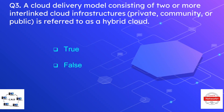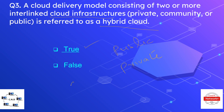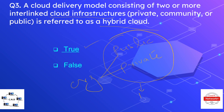Question number three: a cloud delivery model consisting of two or more interlinked cloud infrastructures such as private, community, or public is referred to as a hybrid cloud. We have two options — whether the statement is true or false — and the correct option is true. In the hybrid cloud, an organization can have both a private cloud and a public cloud, and this combination is known as the hybrid cloud.